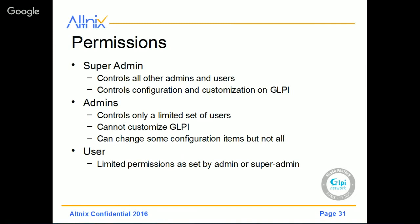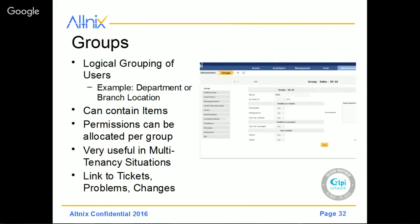You also have the concept of Groups — a logical grouping of users. In a company, you will have subdivisions, departments, or branch locations. A group can also contain assets. Permissions can be allocated per group for different screens — you could have a group with access to your change management module, and another group that has access to only the ticketing system. This is all possible using permissions, and it is very useful in multi-tenant situations where you could potentially have many companies sharing a single GLPI. It is also possible to link tickets, problems, and changes to different types of groups.